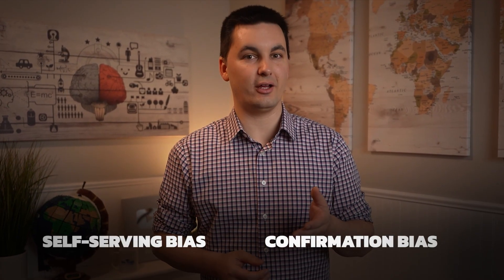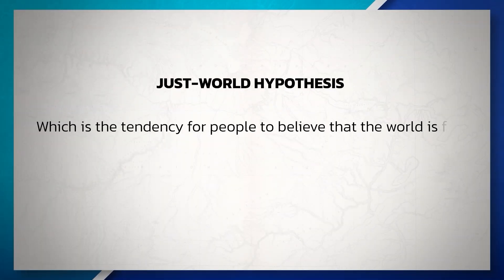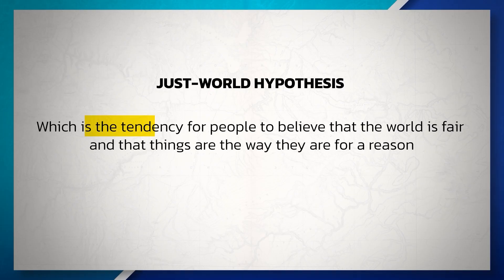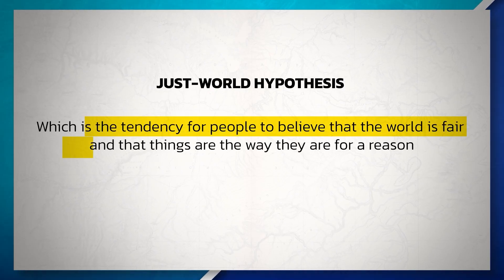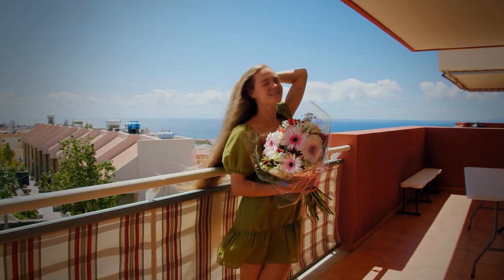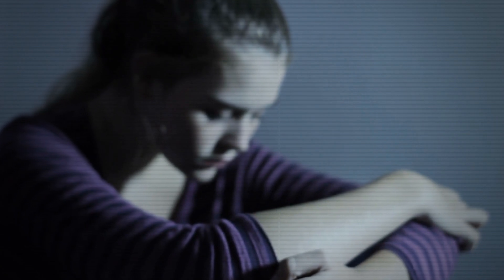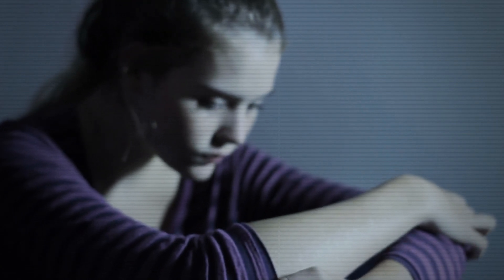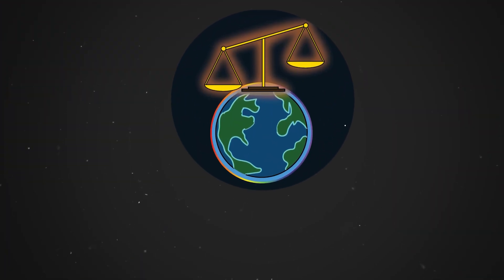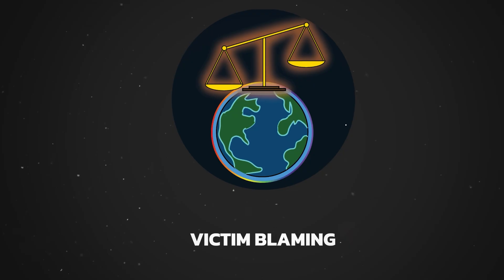Up next is the just world hypothesis, which is the tendency for people to believe that the world is fair and things are the way they are for a reason. Essentially, if you're a good person, good things will happen to you because you're good. But if you're a bad person, bad things will happen to you because you're bad. That's why the just world hypothesis is often associated with victim blaming.